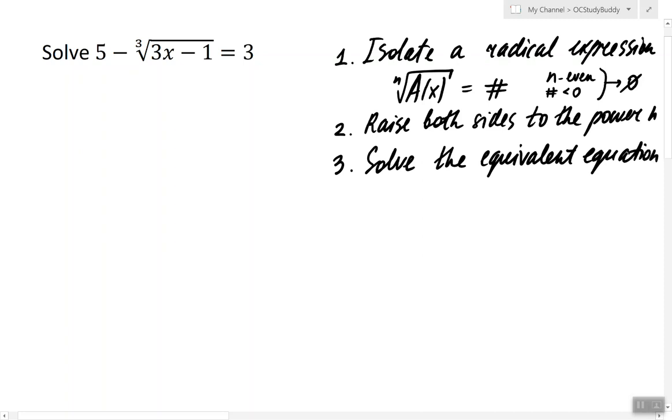So let's get started. Let's isolate the cube root by subtracting 5 from both sides and then dividing by negative 1. After we're done isolating the cube root, we have the following equation.